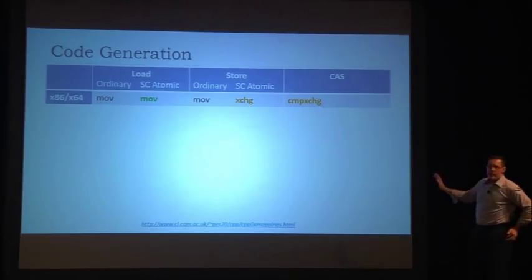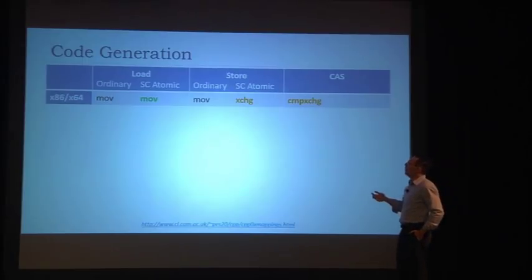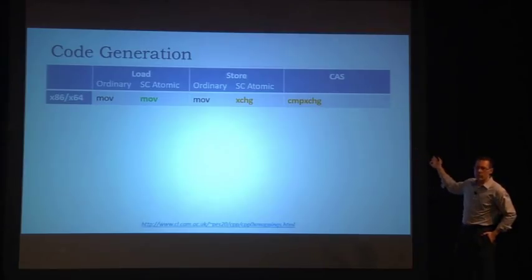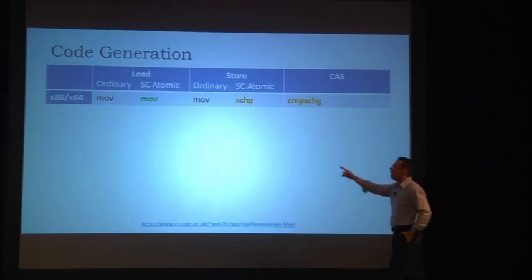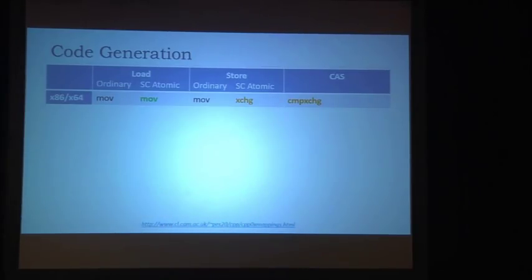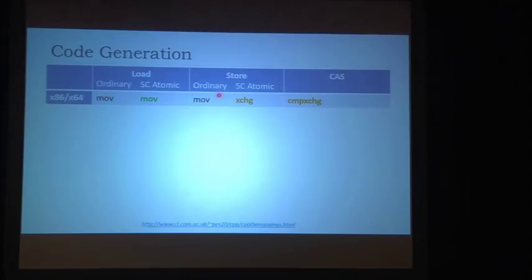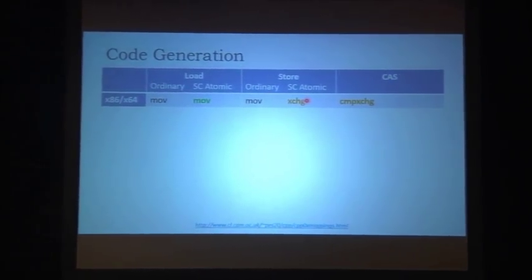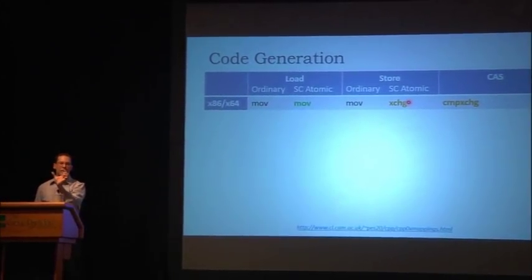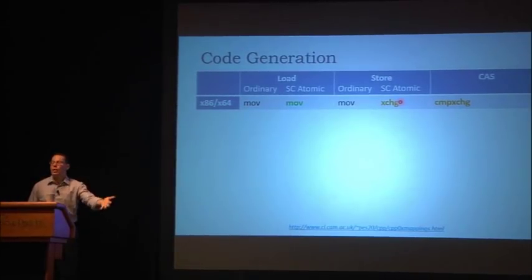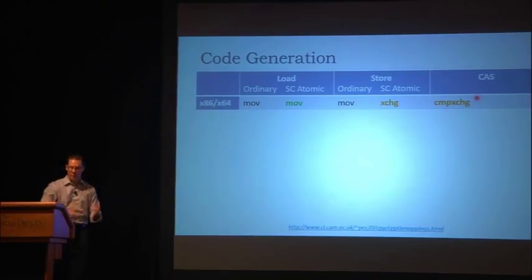On x86 and x64, an ordinary load is a single move instruction, and a sequentially consistent atomic load is also an ordinary move instruction. There is no code generation overhead for sequentially consistent atomic loads on x86. On a store, an ordinary store is a move, but an SC atomic store is an exchange operation — a locked operation. The CAS is also a lock compare-exchange instruction. So exchange does a lock of a memory bus.